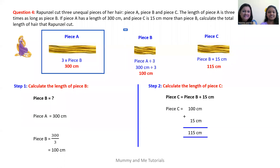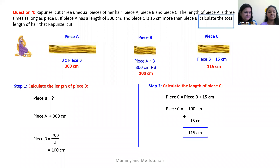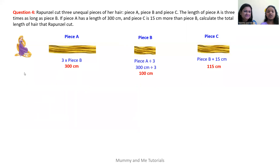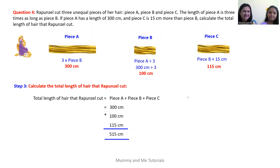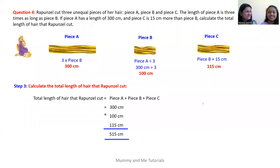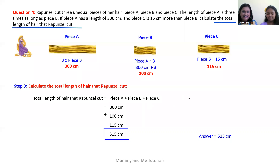Now we know the lengths of piece A, piece B, and piece C. The question asks us to calculate the total length of hair that Rapunzel cut. The total is found by adding all three pieces: piece A plus piece B plus piece C equals 300 centimeters plus 100 centimeters plus 115 centimeters, giving us 515 centimeters in total. The total length of hair that Rapunzel cut was 515 centimeters.